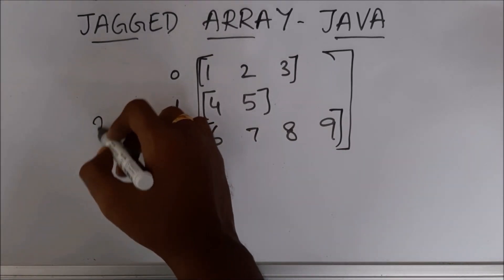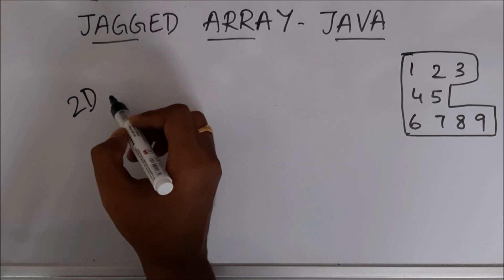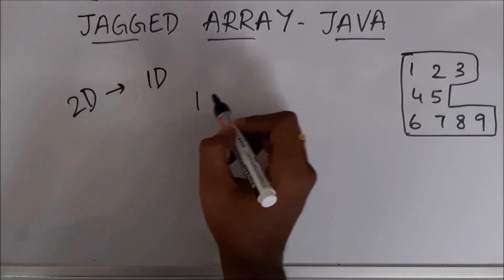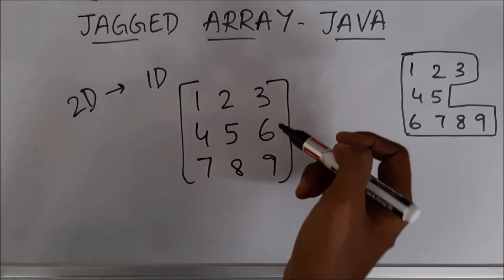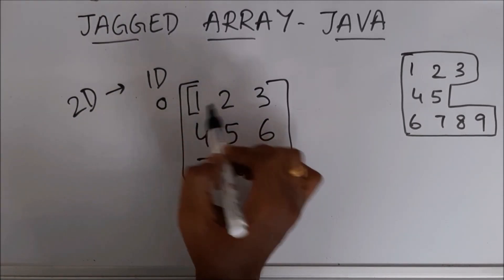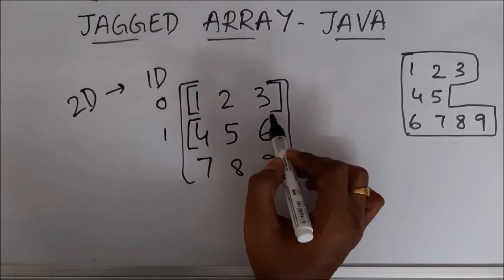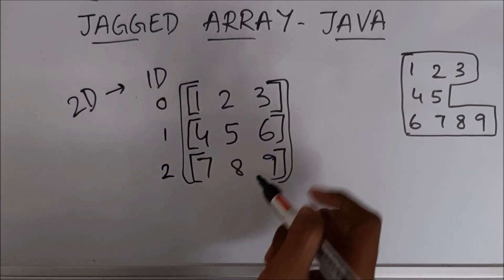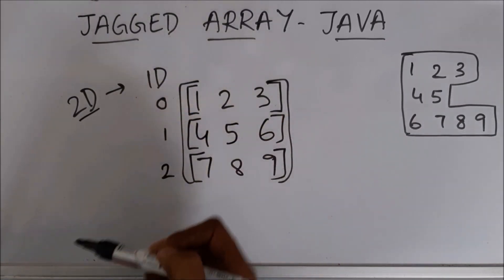Let's first understand what a 2D array is. We can say a 2D array is many 1D arrays. In row number 0 there is a 1D array of size 3, in row number 1 there is a 1D array of size 3, and in row number 2 there is a 1D array of size 3. So we can define a 2D array in this way.